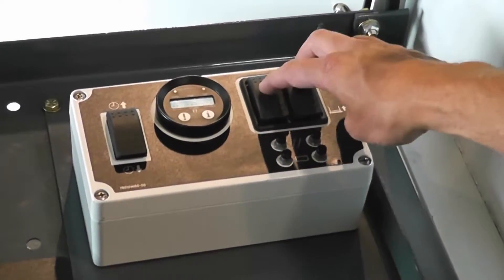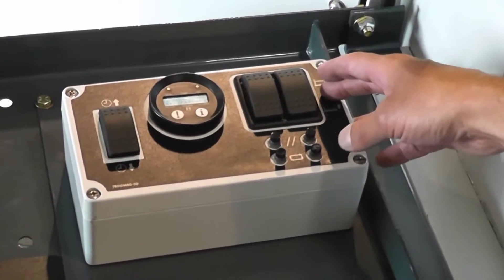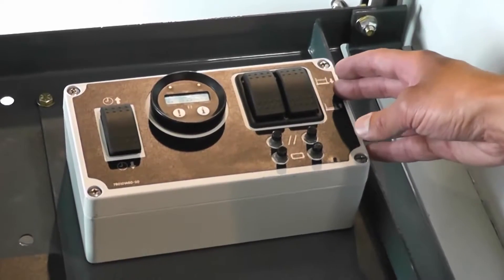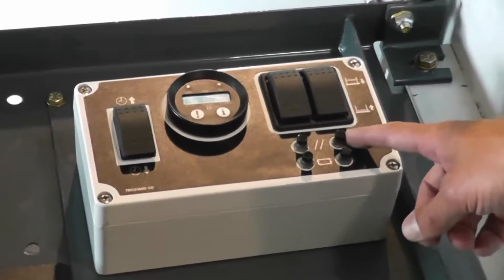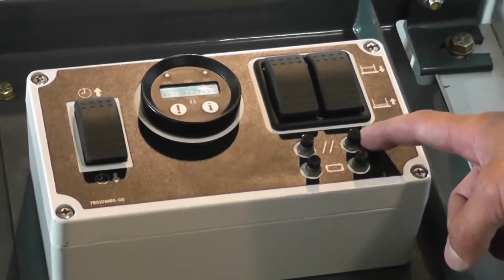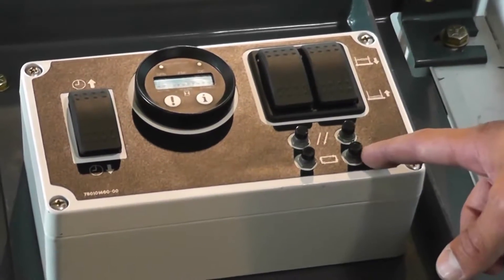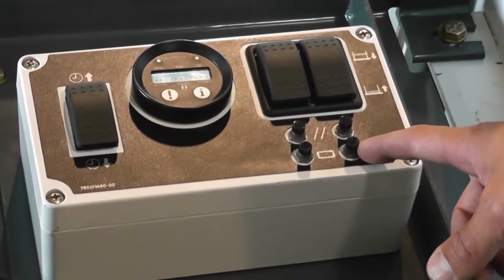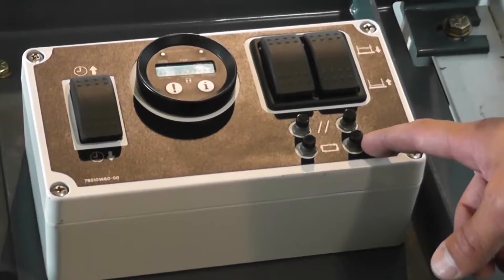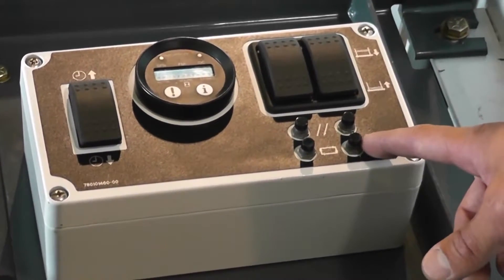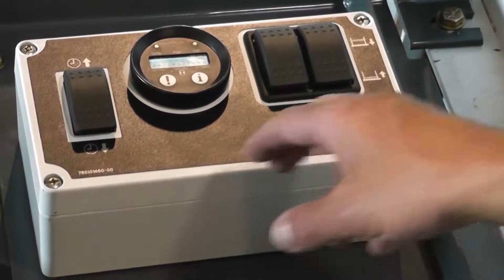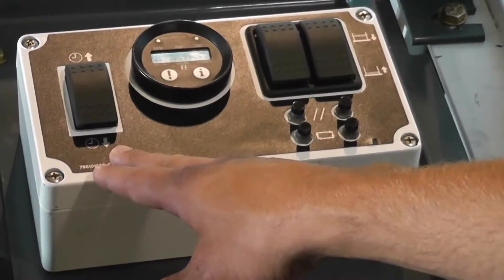Over here, you have your manual elevation raise lower switches, which are used for jog operations and raising the head up and down. Below that are your left and right reset switches. Your next two switches here are the automatic control buttons. Pressing the switches cycles between auto and manual control. Your last switch is the time raise and time lower switch.